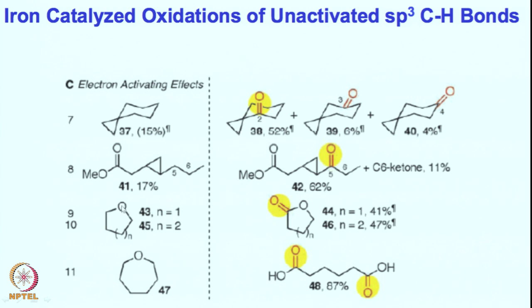So the oxygen lone pair can activate the alpha position, and the cyclopropane ring can also activate the alpha position of a molecule — these are quite powerful for selective functionalization reactions. These are electron-activating effects; we have previously seen deactivating effects from electron-withdrawing groups.